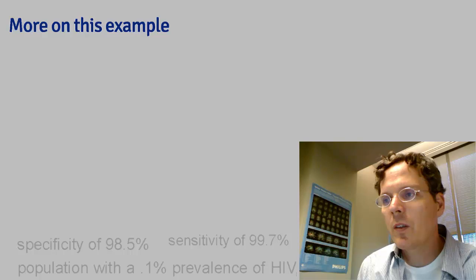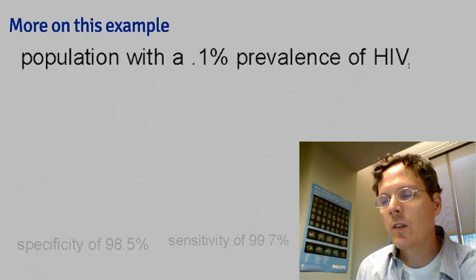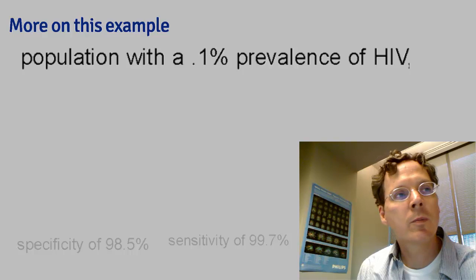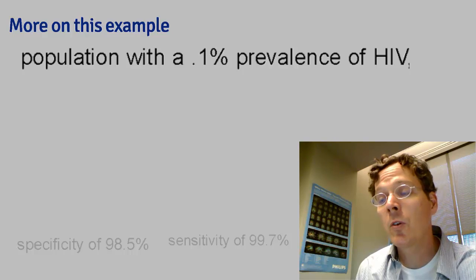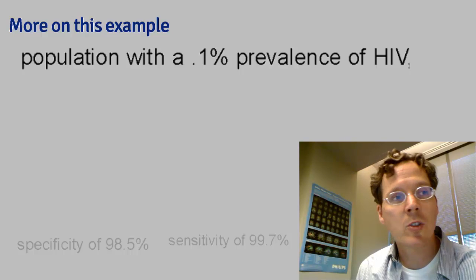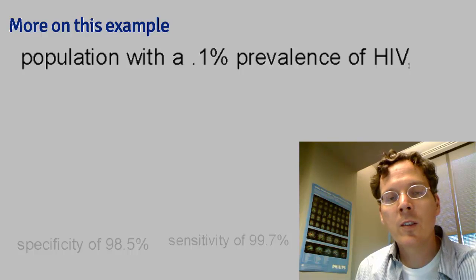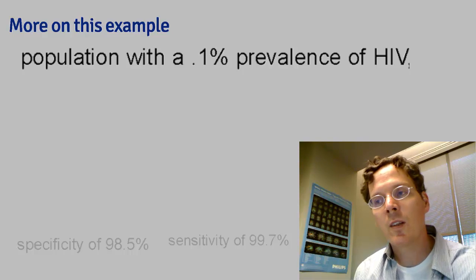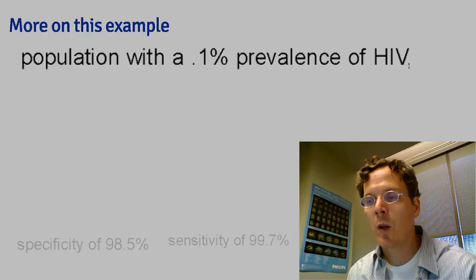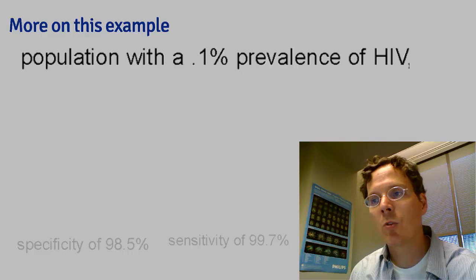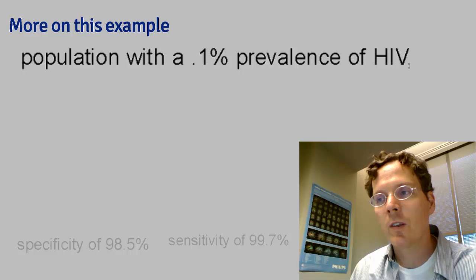The low positive predictive value is largely due to the low prevalence of the disease. However, imagine in the process of counseling this person about their positive test result, the counselor learned that the subject was an intravenous drug user who routinely had intercourse with an HIV-infected partner. They would assume the relevant prevalence for this person was much higher, and thus the positive predictive value was much higher. I want to distinguish between the component dependent on prevalence and the component that reflects the objective evidence of the positive test result — that's what the diagnostic likelihood ratios are, and that's what we'll cover next.